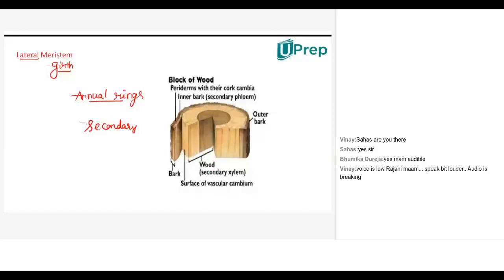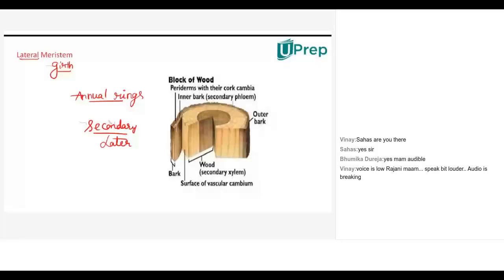So why it is called the secondary meristem? Because you will find the lateral meristem growth only in the later stages of plant life, whereas the apical meristem and intercalary meristem you will find in the initial stages of the plant life. So they are called primary meristems.